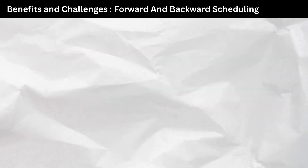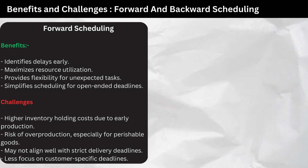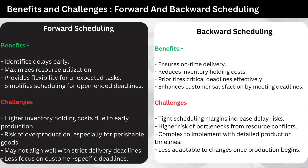Benefits and challenges of forward and backward scheduling. Forward scheduling benefits: identifies delays early, maximizes resource utilization, provides flexibility for unexpected tasks, and simplifies scheduling for open-ended deadlines. Challenges: higher inventory holding costs due to early production, risk of overproduction especially for perishable goods, may not align well with strict delivery deadlines, and less focus on customer-specific deadlines. Backward scheduling benefits: ensures on-time delivery, reduces inventory holding costs, prioritizes critical deadlines effectively, and enhances customer satisfaction. Challenges: tight scheduling margins increase delay risks, higher risk of bottlenecks from resource conflicts, complex to implement, and less adaptable to changes once production begins.